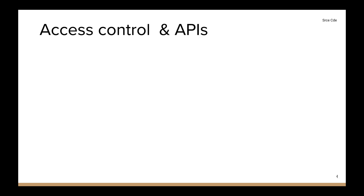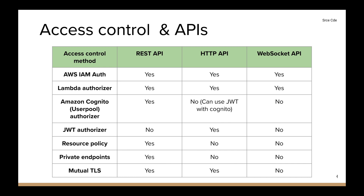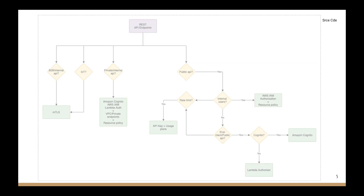Within API gateway we have REST API, HTTP API, and WebSocket API. REST API supports all access control methods except JWT. HTTP API does not support Amazon Cognito directly, but you can use Cognito with JWT; resource policy and private endpoints are also not supported by HTTP API. For WebSocket API, only IAM authorizer and Lambda authorizer are supported — the rest are currently not supported.